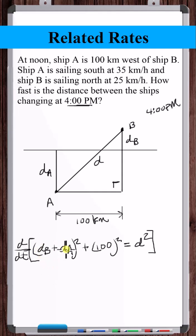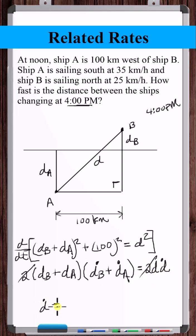What is the derivative of D-B plus D-A squared with respect to time? Derivative of 100 squared, this doesn't change, so this is 0. Now the derivative of D squared. We're looking for D-dot. So let's solve for D-dot. Now we just need to fill in these values.